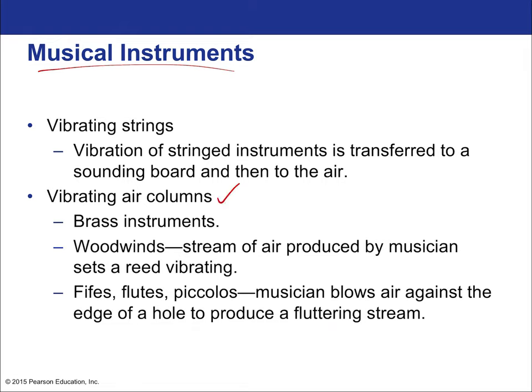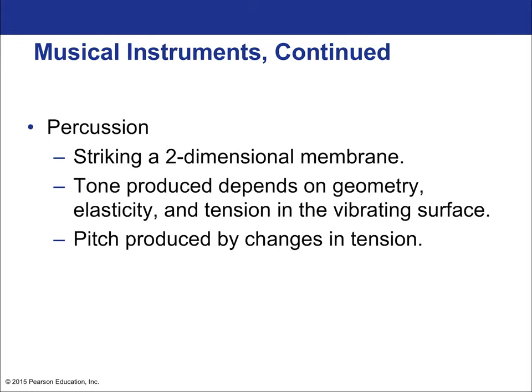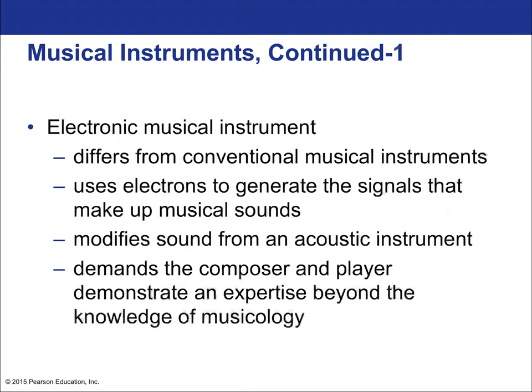Air columns, like a brass instrument or woodwinds: the stream of air produced by the musician sets a reed vibrating. For flutes and piccolos, the musician blows air against the edge of a hole to produce a fluttering stream. Percussion: striking a two-dimensional membrane — the tone produced depends on the geometry, elasticity, and tension of that vibrating surface. Electronic musical instruments use electrons to generate the signal that makes up musical sounds.